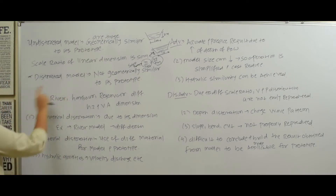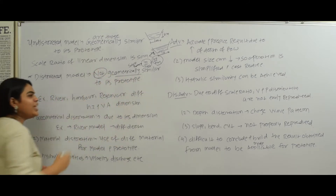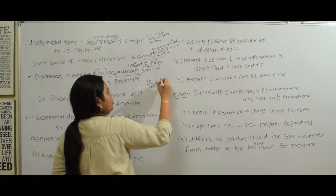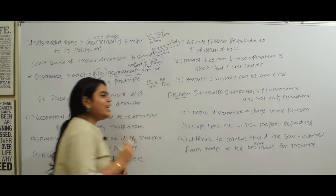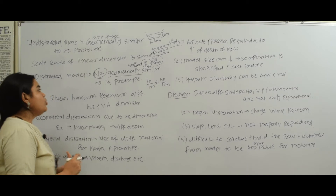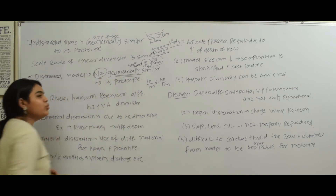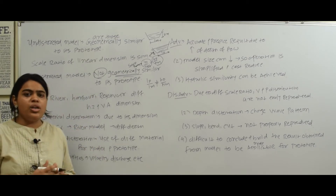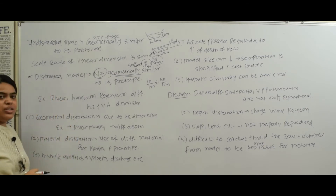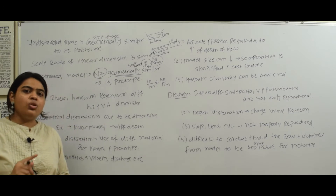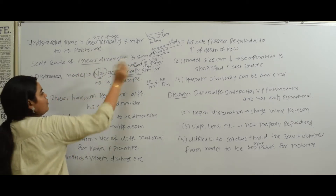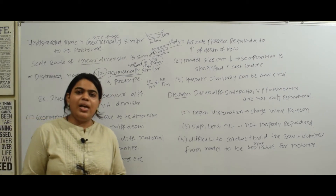But in a distorted model, it is not geometrically similar — the ratio of length of prototype to length of model is not equal to height of prototype to height of model. The scale ratio of linear dimensions is not the same. So the undistorted model is geometrically similar, meaning the scale ratio is the same, but the distorted model is not geometrically similar.